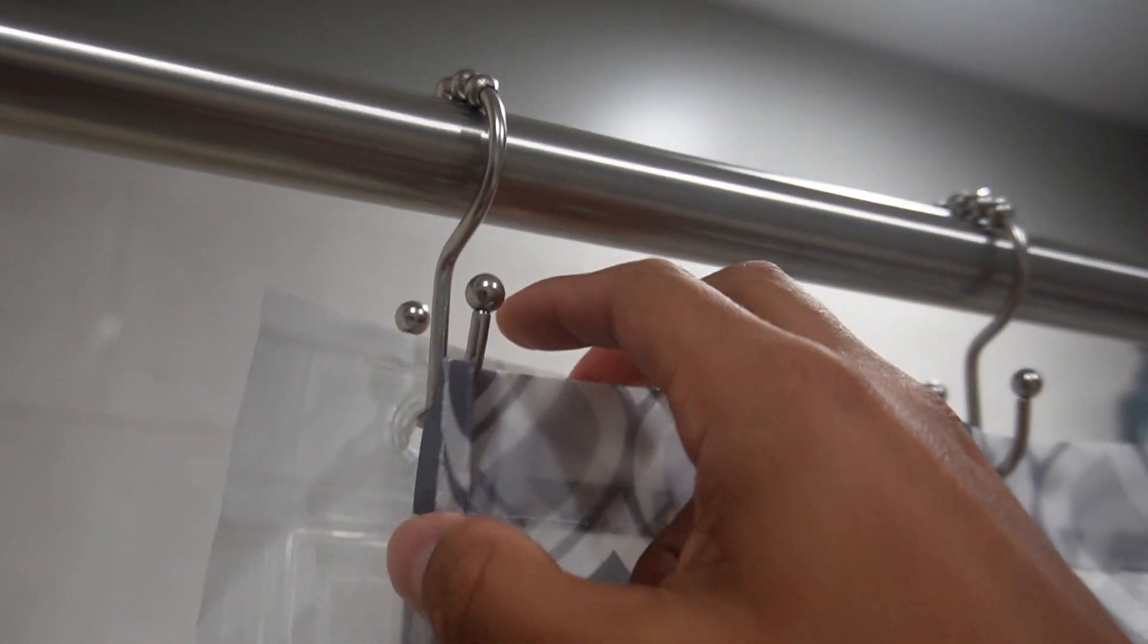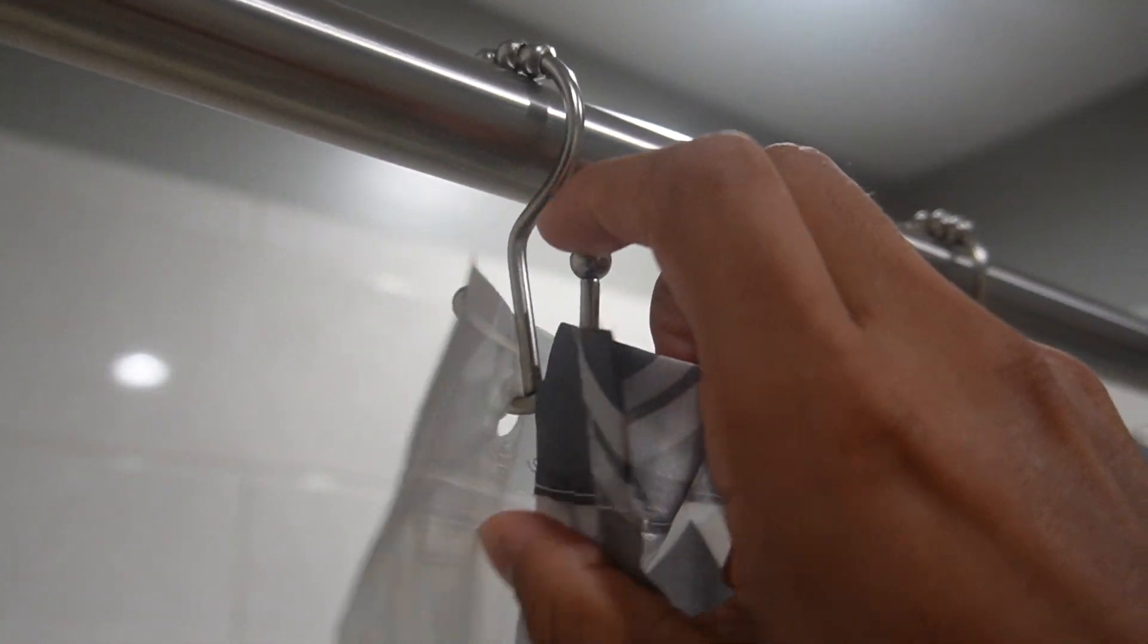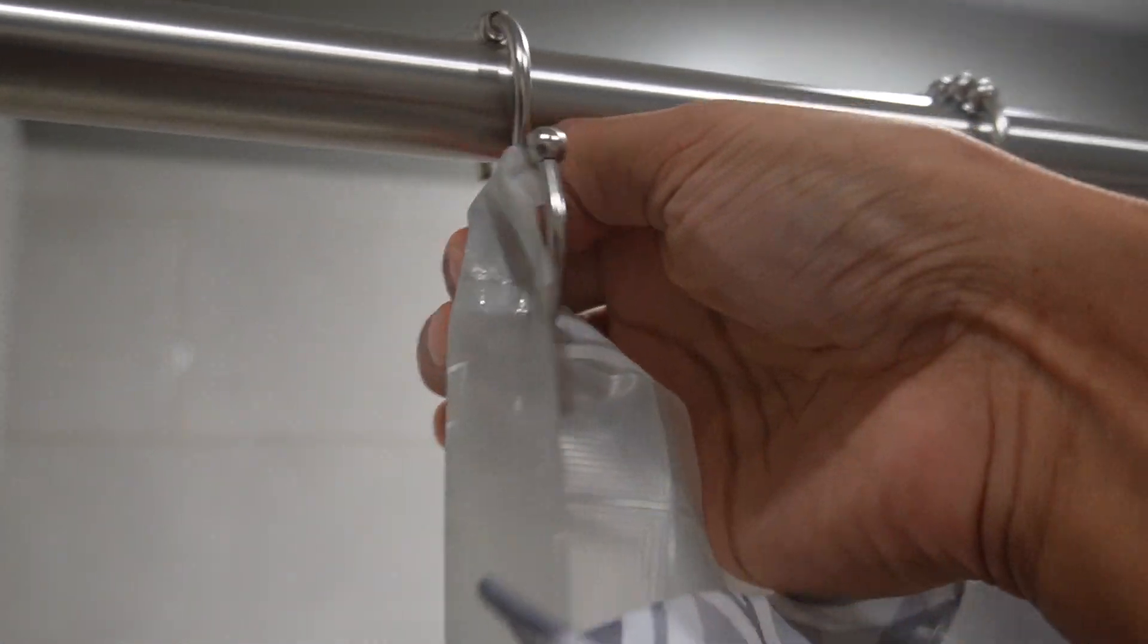This is my review of the shower curtain rods. Something cool about this is they have two hooks, so one side can be for the liner and the other side for the inside plastic.